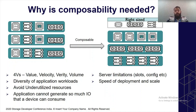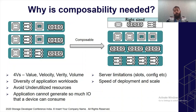Server limitations mean the number of slots and configurations are very limited for a particular hardware — you cannot keep expanding. We need virtual methods to provision CPU, compute, and storage to applications virtually so they make the best out of the storage. Speed of deployment and scale is very fast with composability — you can scale up or scale out on demand very quickly.